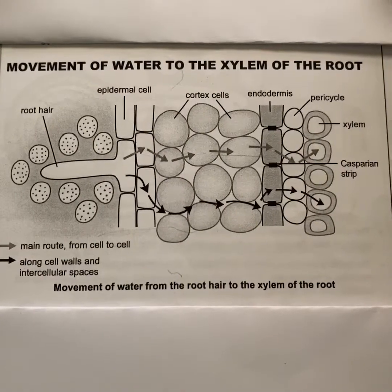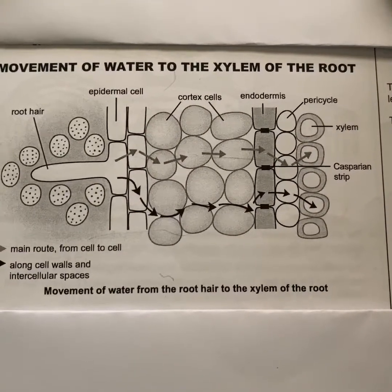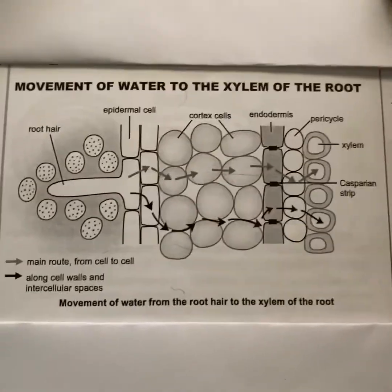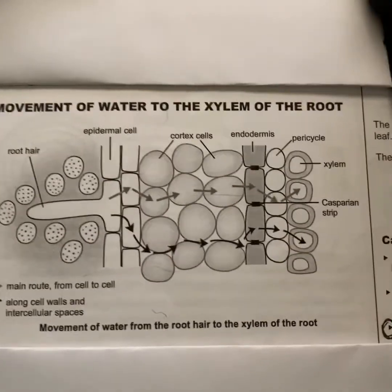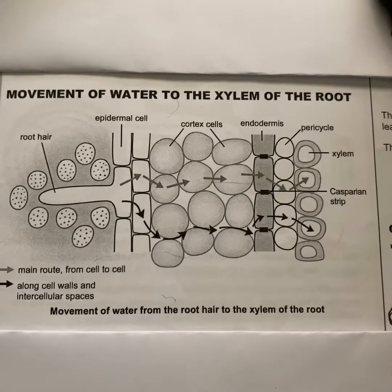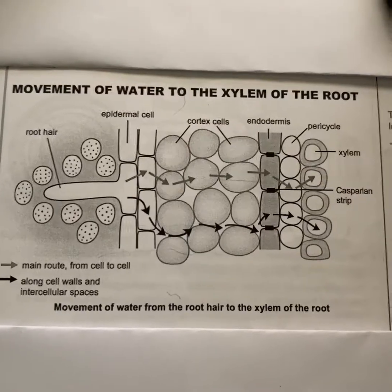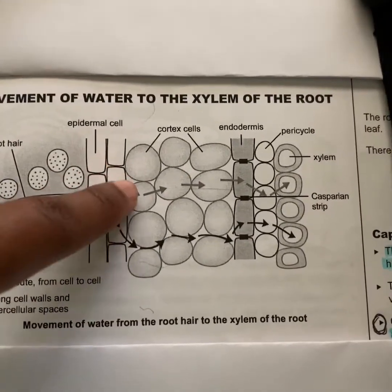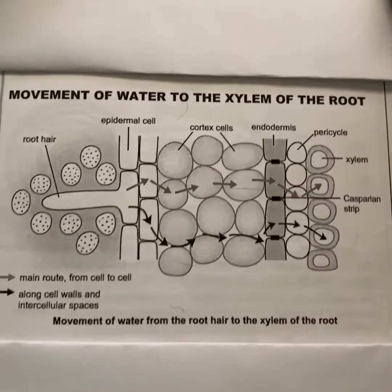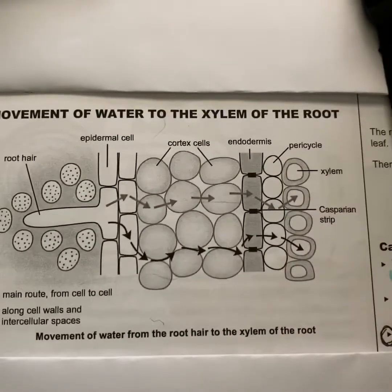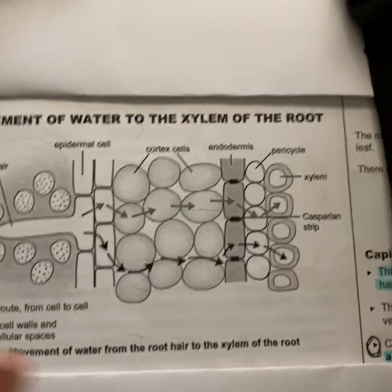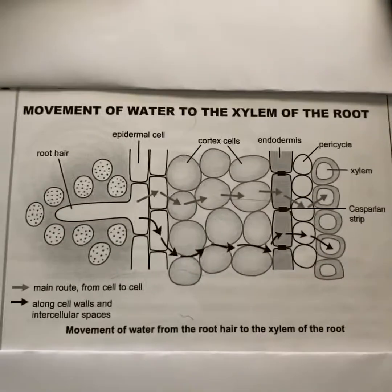Now we're going to look at the movement of water from the root hair to the xylem. On the root there are two routes the water can take. The first is the cell-by-cell route, indicated by the light gray arrows — water moves by osmosis through the selectively permeable membrane of each cell. The disadvantage of this method is that it is slower. The second route, indicated in black, happens through the cell walls and intercellular air spaces by diffusion, and that route is faster.